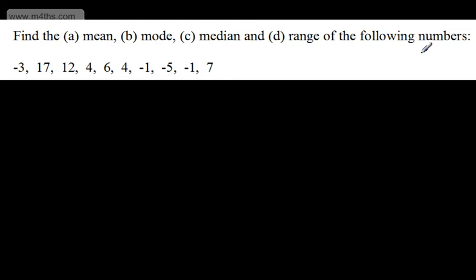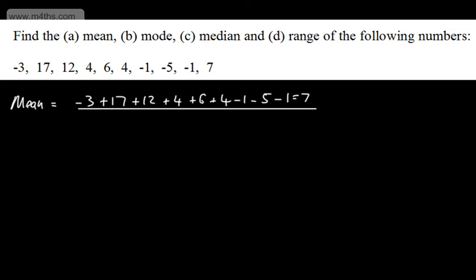Let's now find the mean from the following numbers. This time, we've got negatives. So how many numbers have I got? I've got 10. So we're just going to go ahead and do this. The mean, we're going to have negative 3 plus 17 plus 12 plus 4 plus 6 plus 4 minus 1 minus 5 minus 1 plus 7. And I need to divide by the number of items. We've got 10 items, so I'll be dividing by 10.